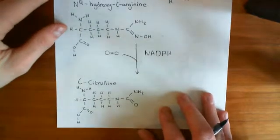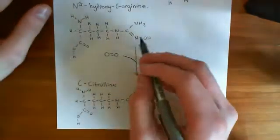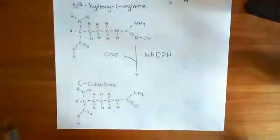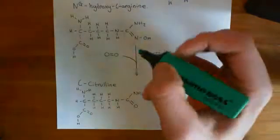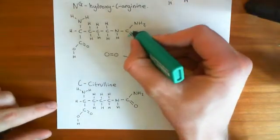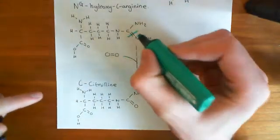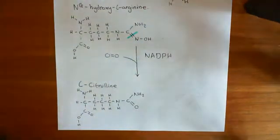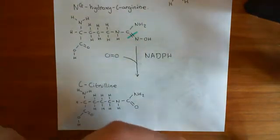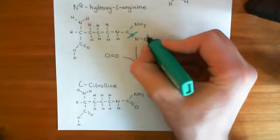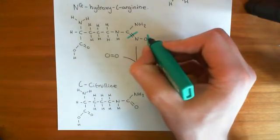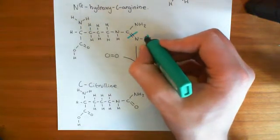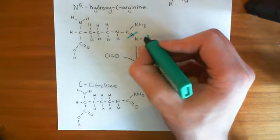Now, it is this guanidino-nitrogen which is going to form nitric oxide. So, what's going to happen then? What we're going to do is we're going to cleave this bond between the carbon and the nitrogen, both bonds. We're going to cleave that double bond. We're then also going to cleave the bond between the oxygen and the hydrogen to create a hydrogen atom that's free here, and then an oxygen that has a free electron now.